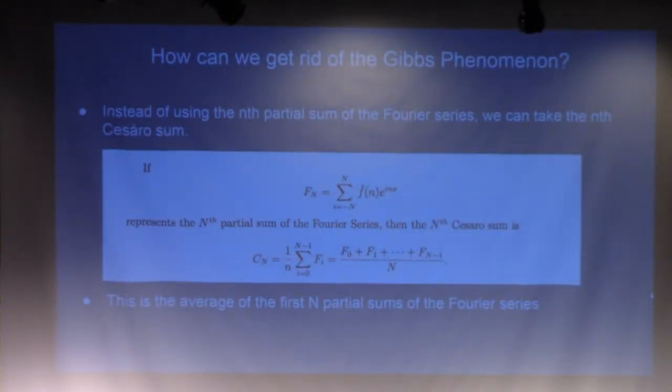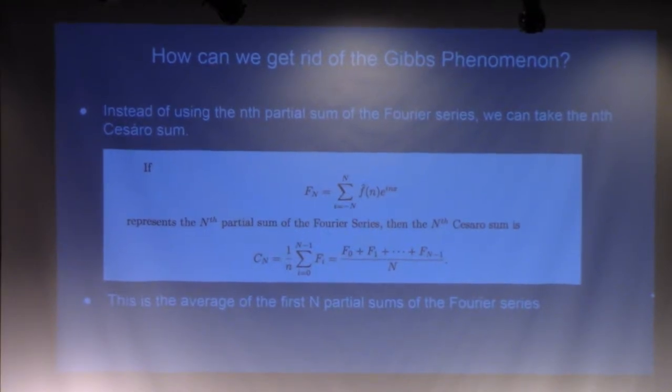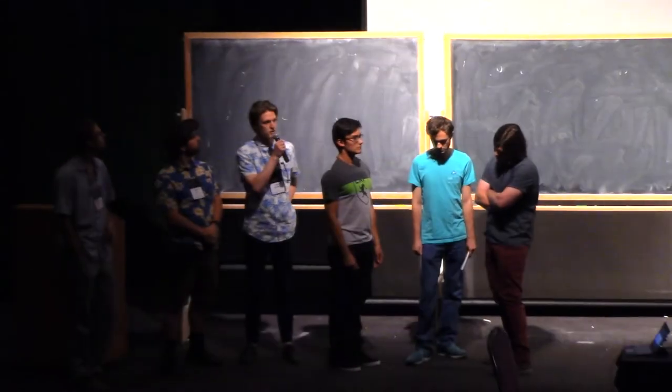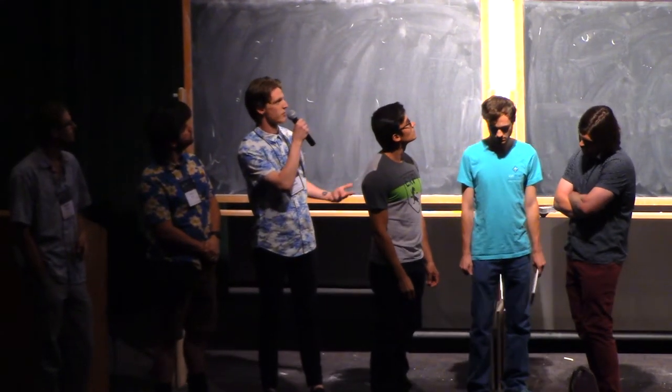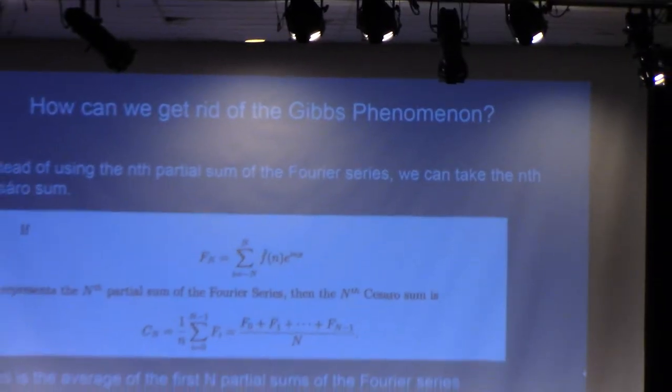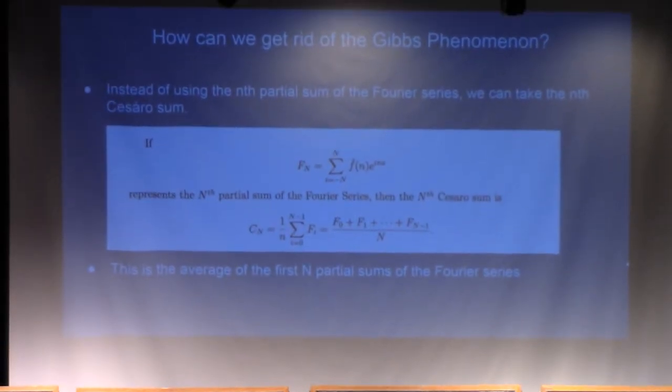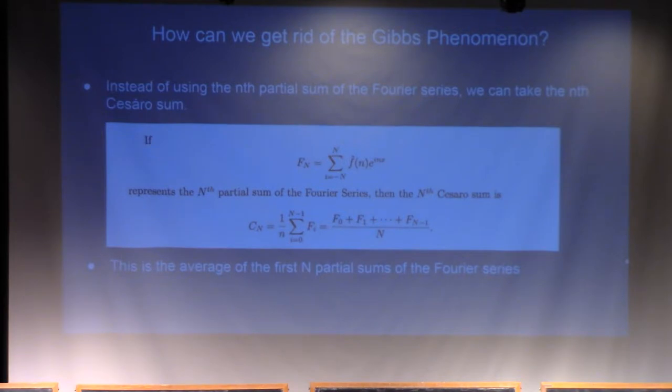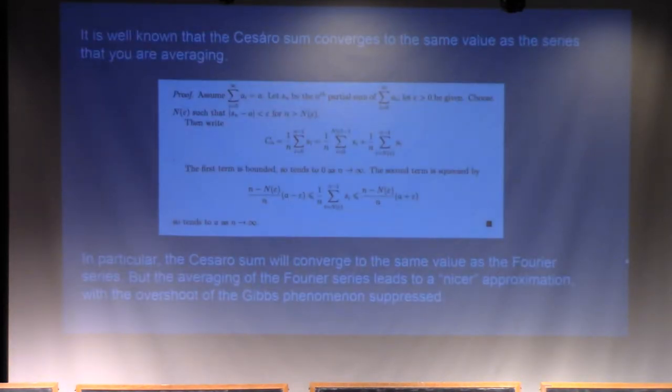So when we're approximating a function, a natural question to ask is, how can we get rid of this Gibbs phenomenon around the discontinuities? And kind of a natural way is, instead of approximating this function by finite Fourier series, is to take the average of those first couple finite terms. And so that's given formally by a Cesaro sum.